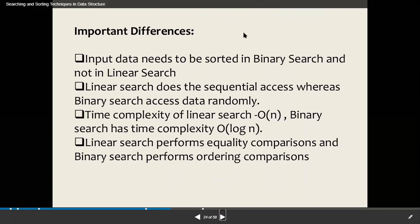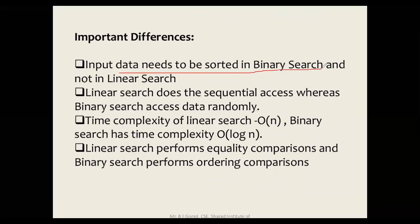The important differences between these two: In binary search, the input data needs to be sorted, but in linear search it doesn't have to be sorted. Linear search does sequential access whereas binary search accesses data randomly. Time complexity of linear search is O(n), binary search is O(log n).